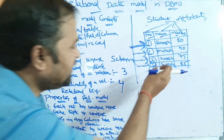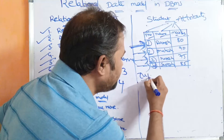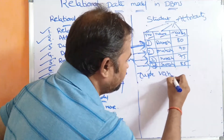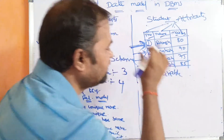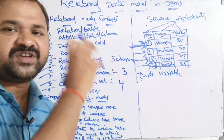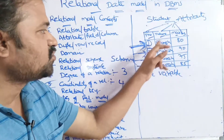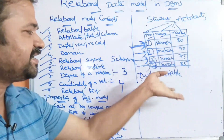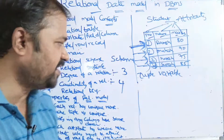The data which is entered in the tuple can be called as a tuple variable. Tuple variable means the data which we enter in the table — for example, 1, Ramesh, 82; 2, Mahesh, 90 — all those values are called tuple variables.